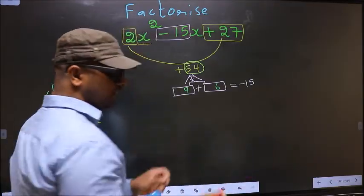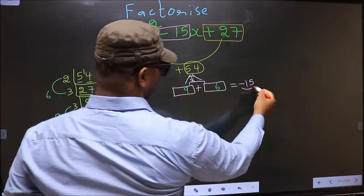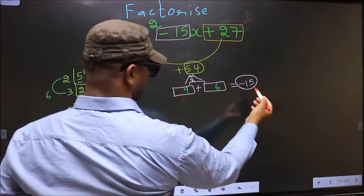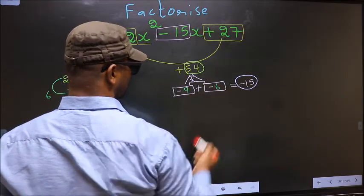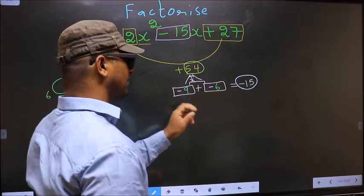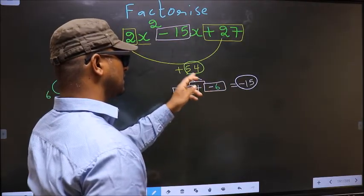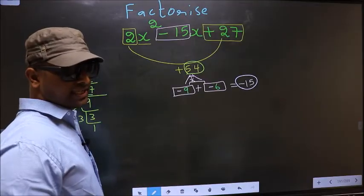Now, we should adjust the signs. What I mean is, over here we have minus 15. To get minus 15, we should place negative here and also here. Minus 9 minus 6 is minus 15, minus 9 into minus 6 is plus 54. So we have adjusted the signs.